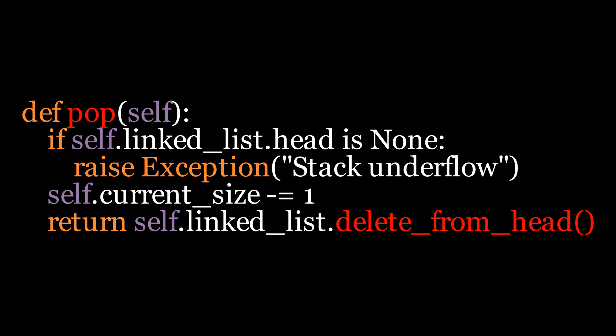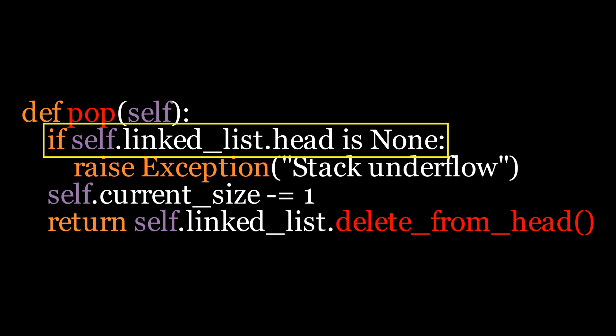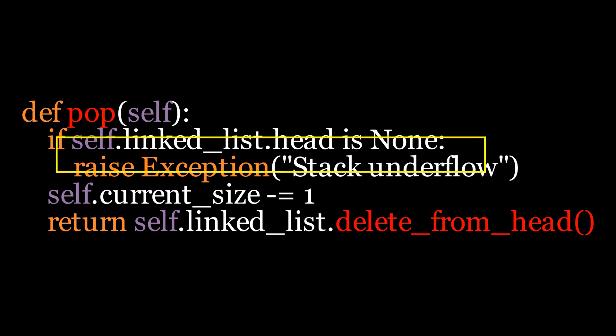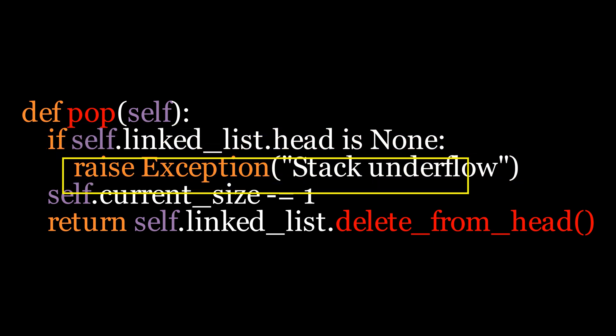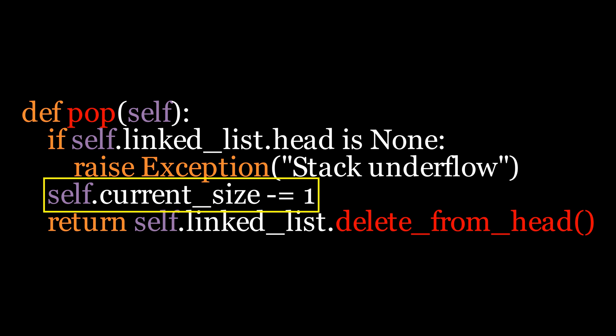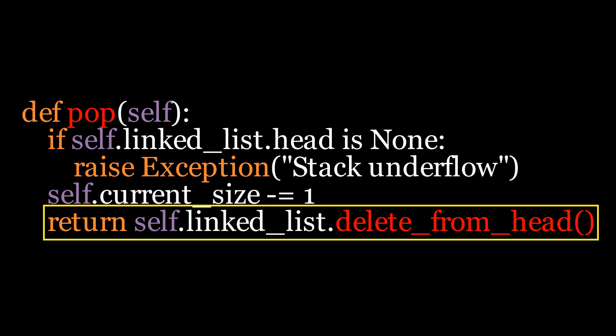To pop an element, we will first define the pop function. Then we'll check if the stack is empty. If it is, we'll raise a stack underflow error. Otherwise, we'll decrement the current size by 1 and delete the node from the head of the linked list.